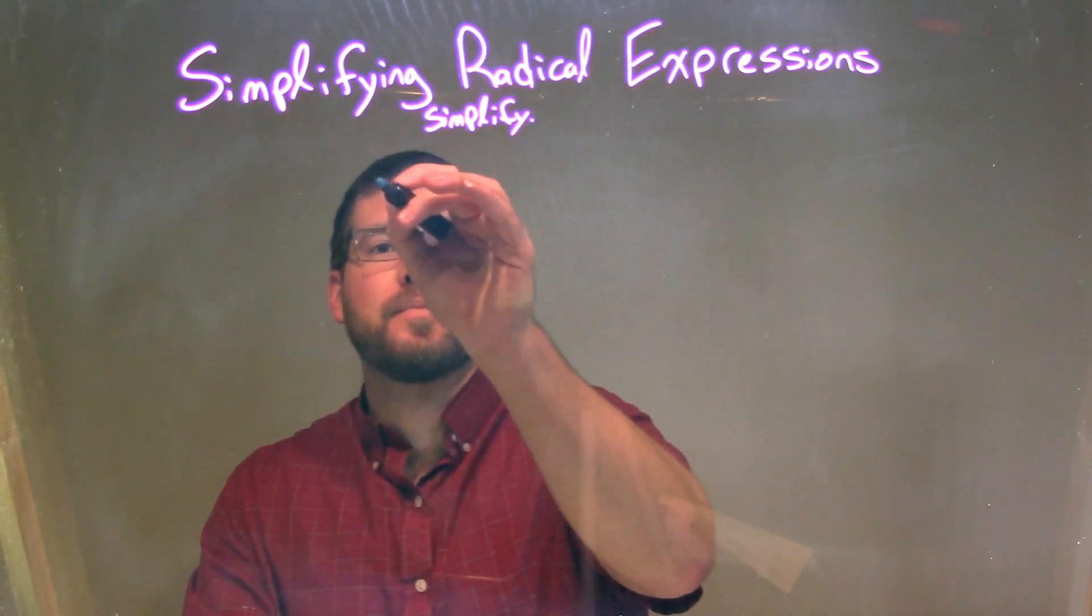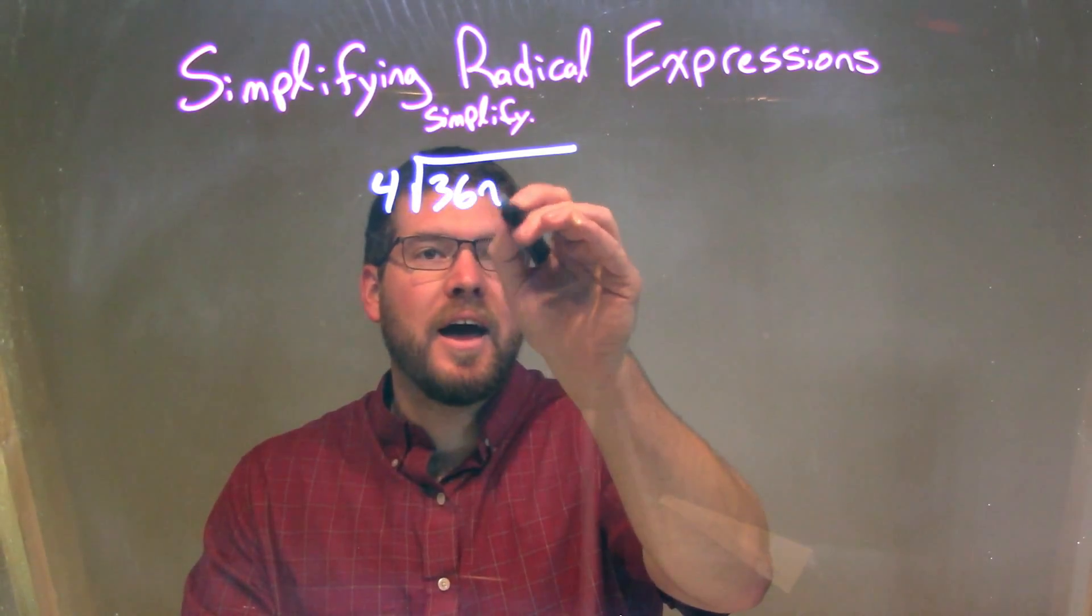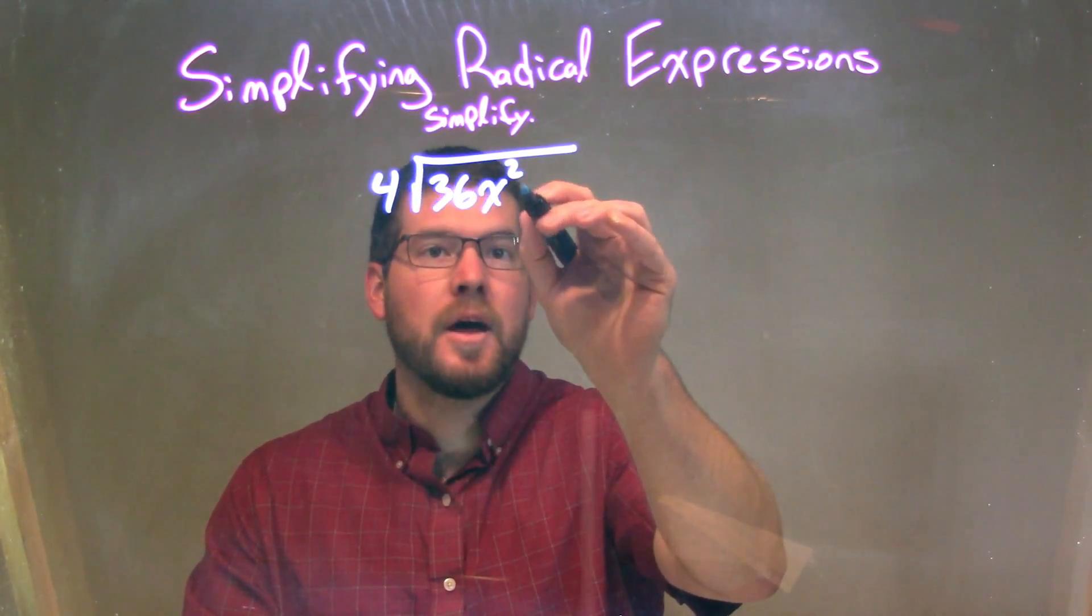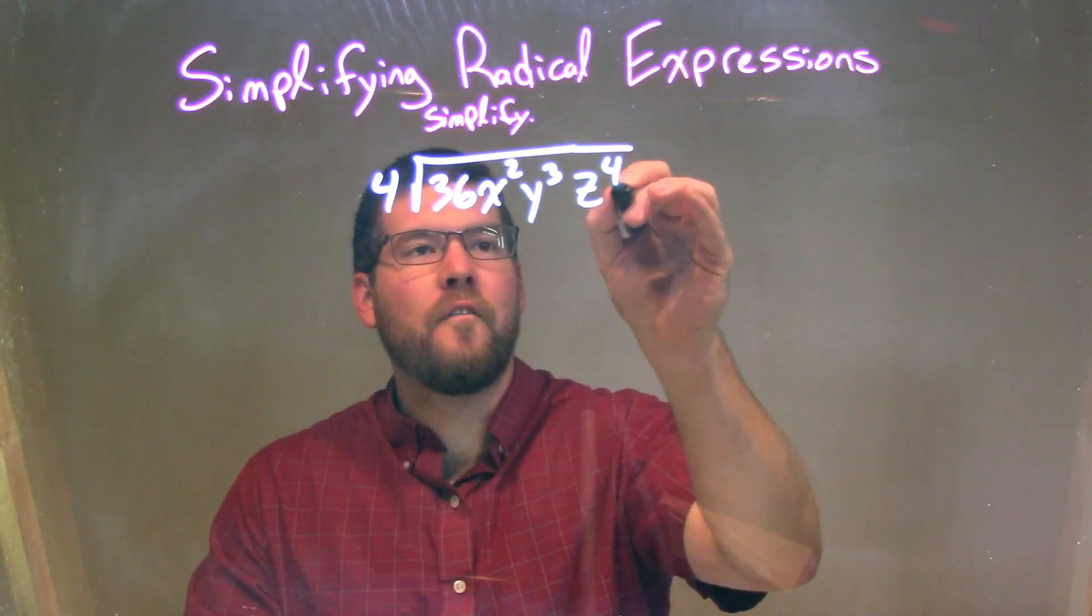So if I was given this expression, 4 times the square root of 36x squared times y to the third times z to the fourth.